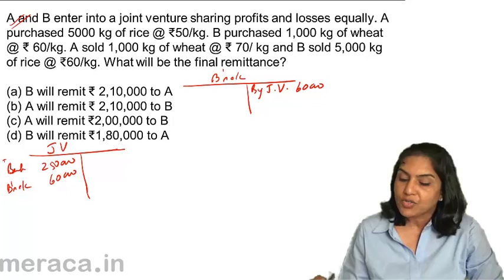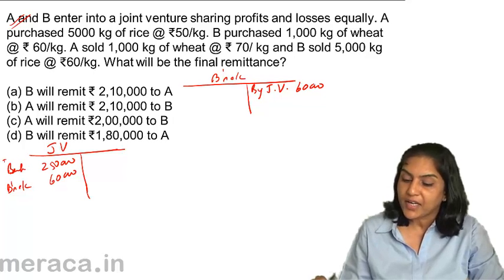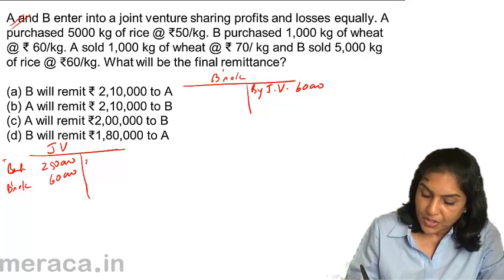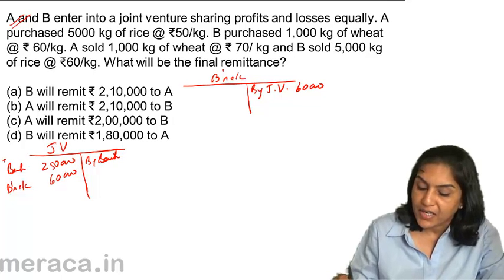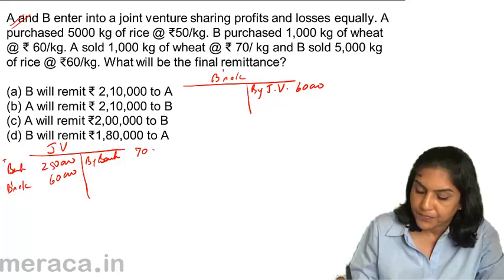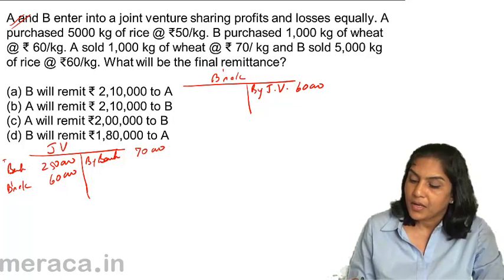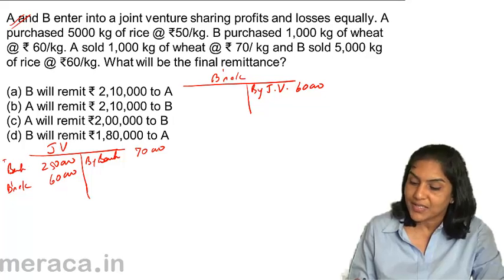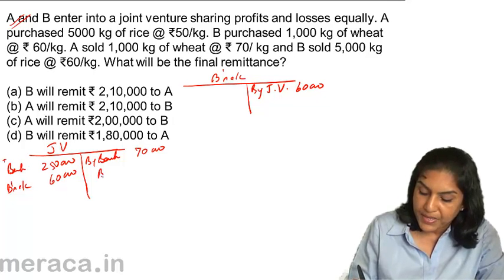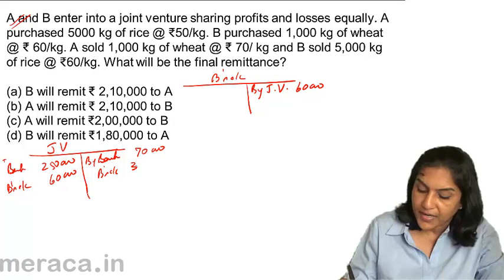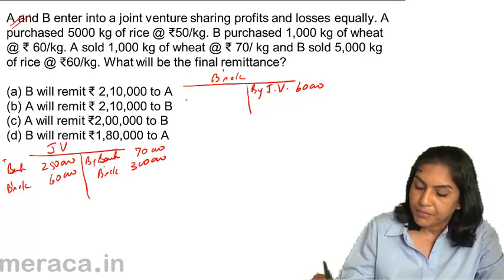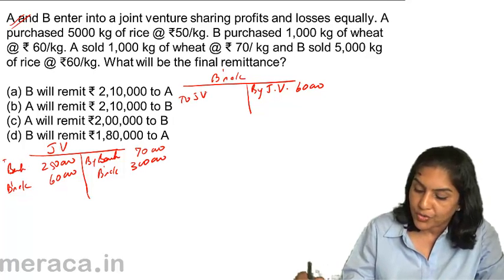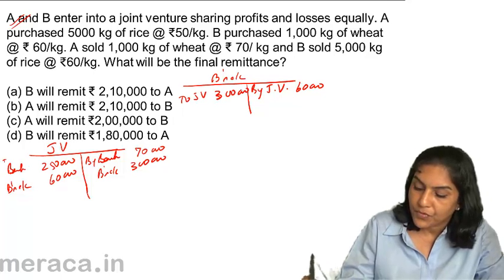A sold 1,000 kg of wheat at ₹70 per kg, so credit by bank — A receives ₹70,000. B sold 5,000 kg of rice at ₹60 per kg, so credit by B's account — we are getting ₹3,00,000. B's account is debited to joint venture for ₹3,00,000.